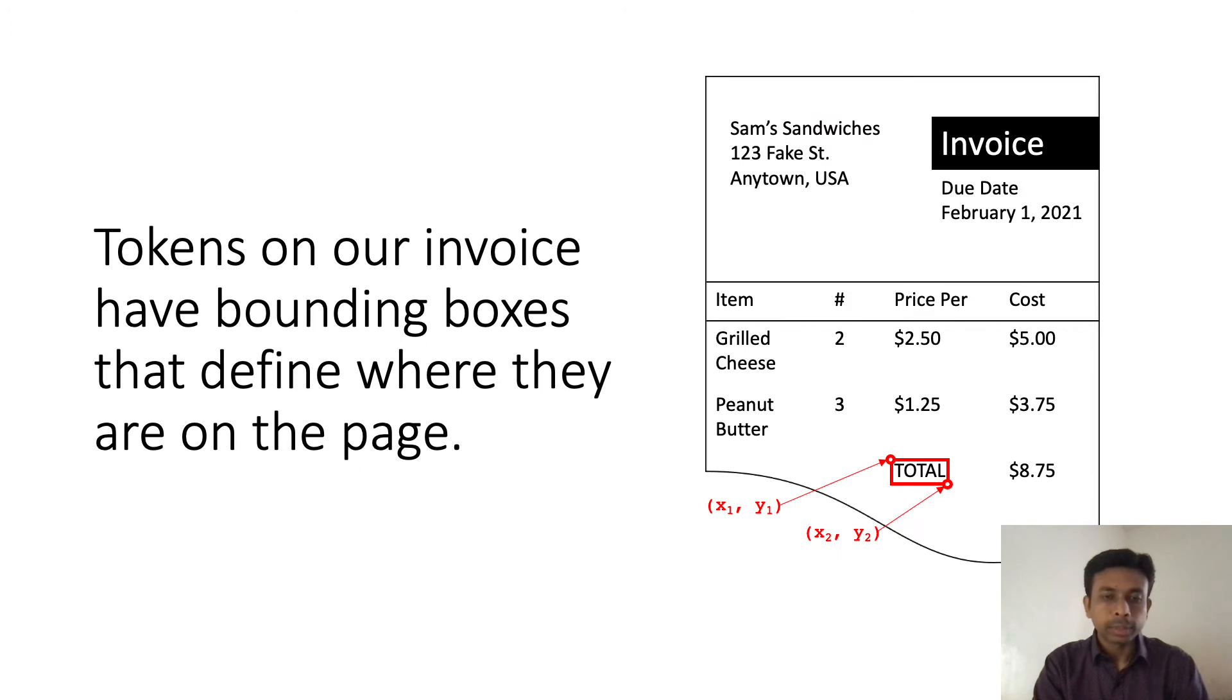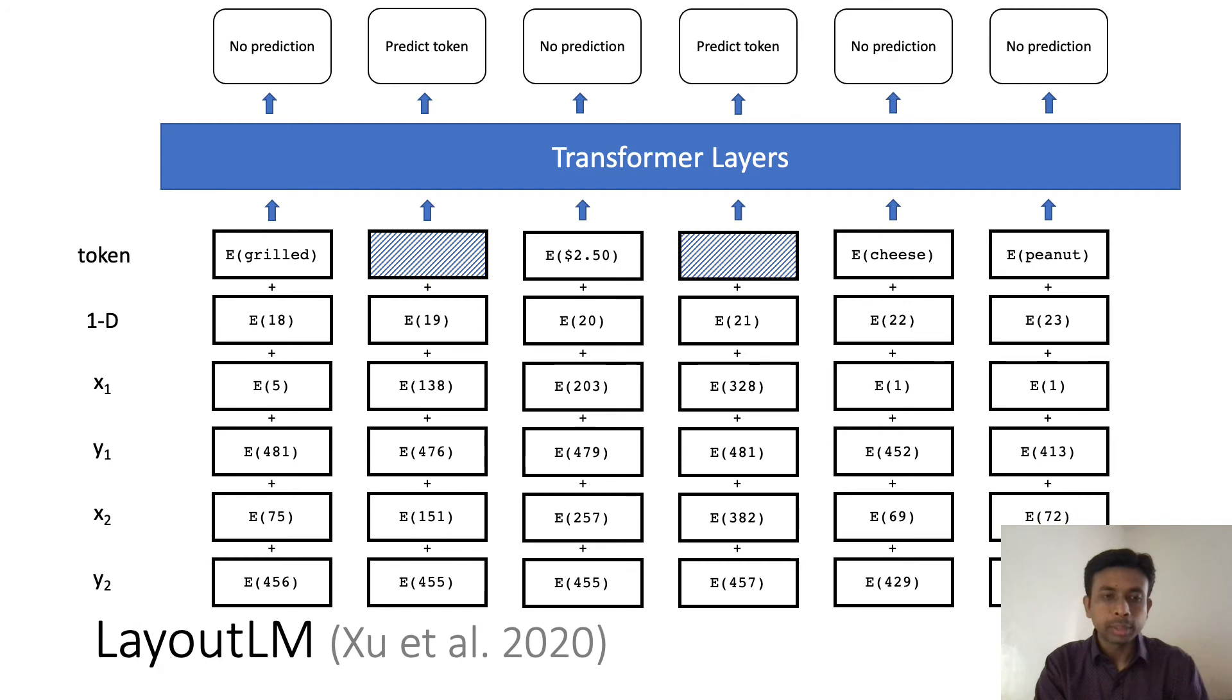But for these visually rich documents, we also know the position of these words by having these bounding boxes where we have these x-y coordinates of the corners of the box. The LayoutLM model adds these coordinate embeddings in addition to the 1D positional embedding. This simple step helps the model to outperform state-of-the-art on different document recognition datasets.